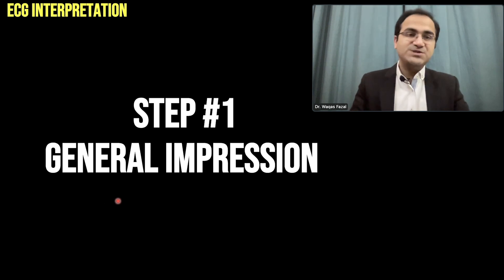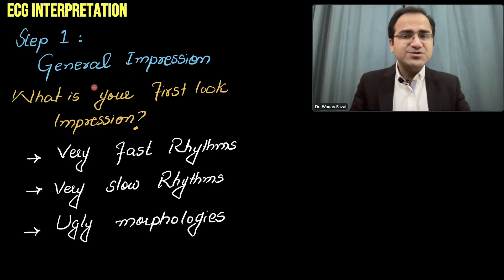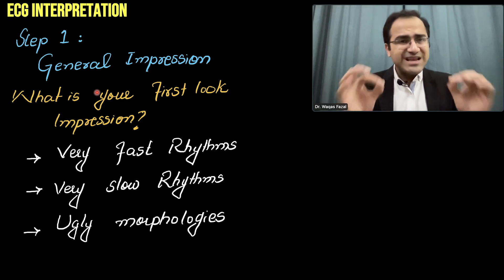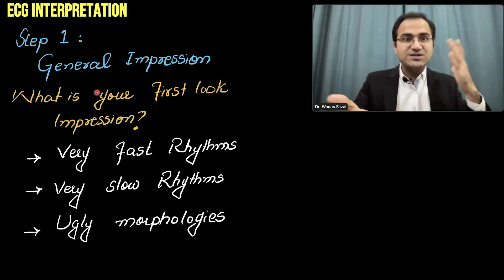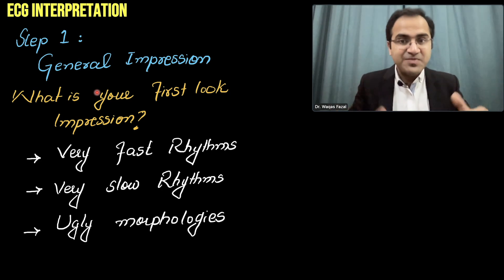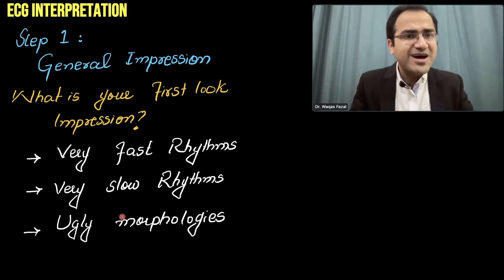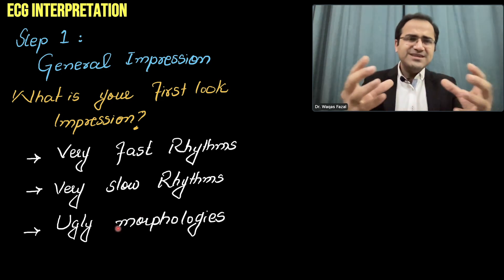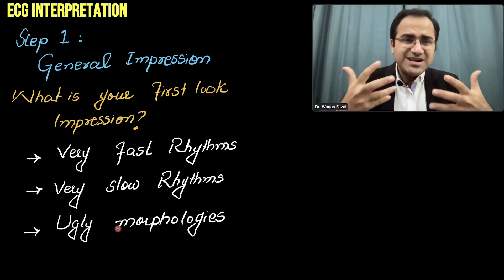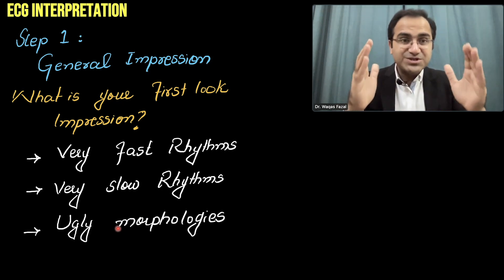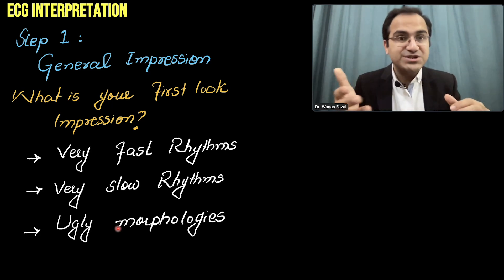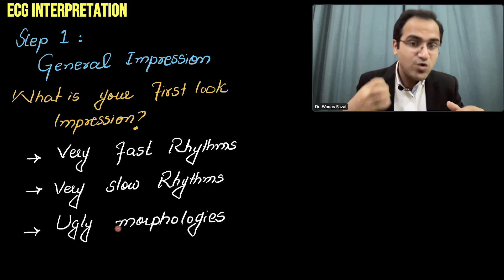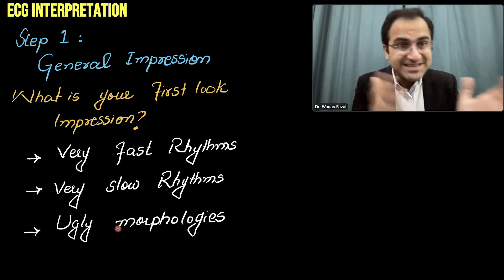Now coming to the first step: general impression. In this step you see what is your first-glance impression — when someone hands you an ECG and you just have a quick look at it, what is your first impression? Is it a very fast rhythm, is it a very slow rhythm, or are there ugly morphologies present? That is called a first general impression, and it is very important in handling emergencies — fast, slow, or ugly morphologies all indicate emergencies.